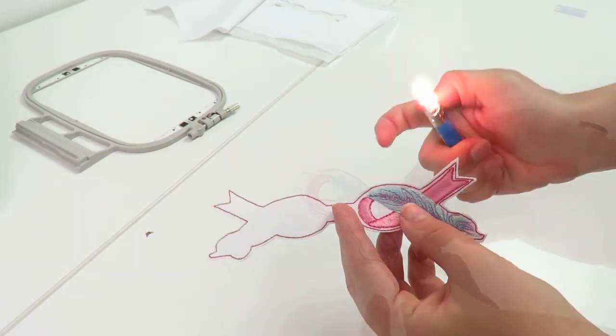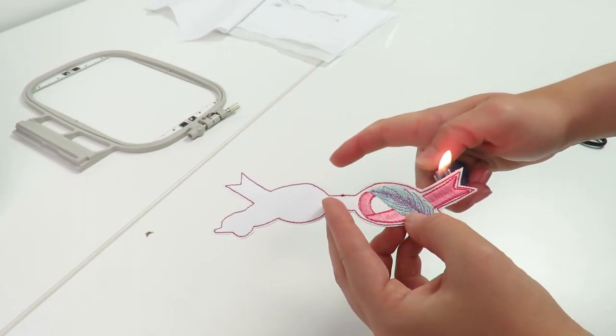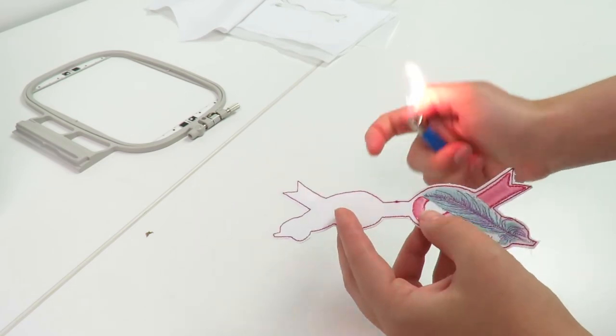Once you have cut out the design and it is not a leather type of fabric, use a lighter to burn the edges and keep the fabric from fraying.